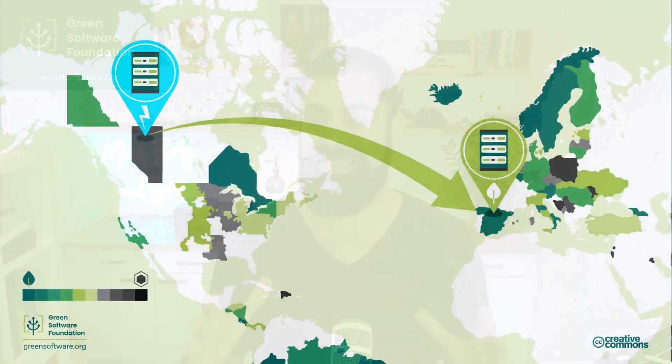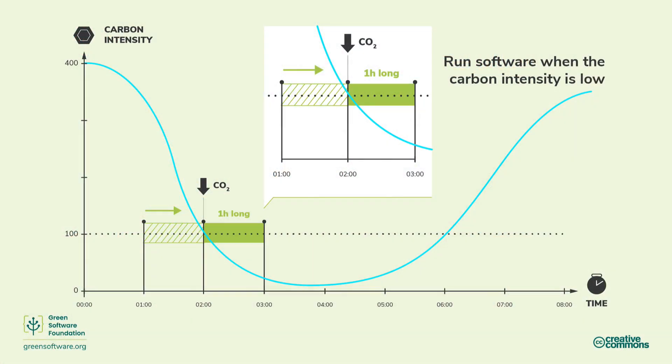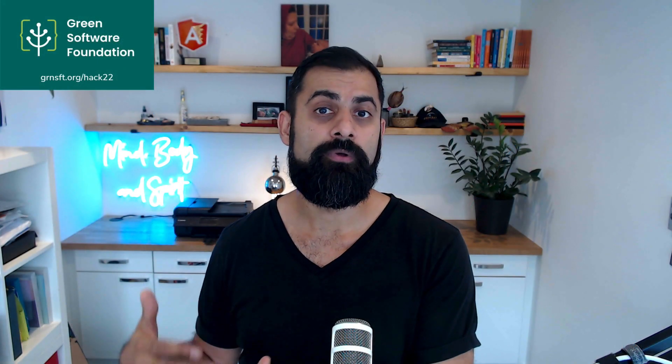Location shifting means running software in a region of the world which has cleaner sources of energy — it might have more wind farms, for example. Time shifting means running your software at times when there is cleaner energy, for example when the sun is shining and there tends to be more energy coming from solar farms.